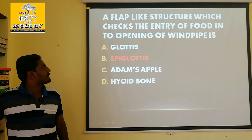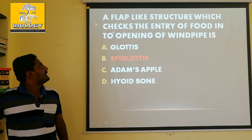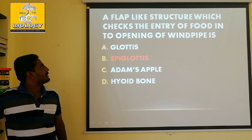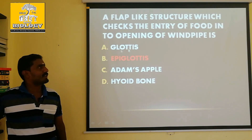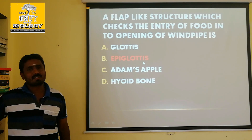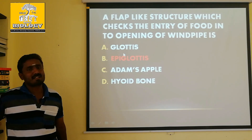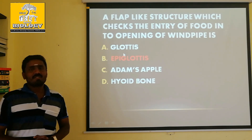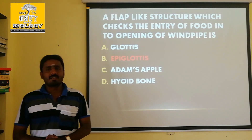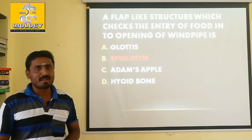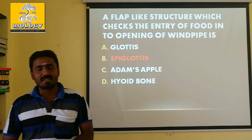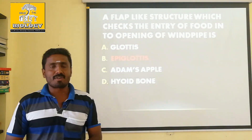I am telling about the answer again — a flap-like structure which checks the entry of food into the opening of the windpipe. This is the epiglottis. We will see that in the video. If you are aware of this, you can subscribe to our channel and like and share.